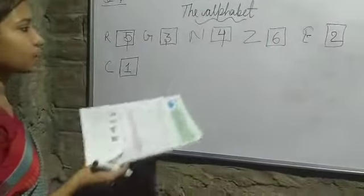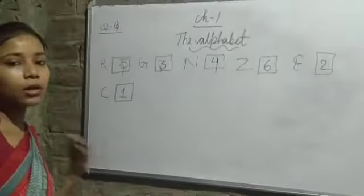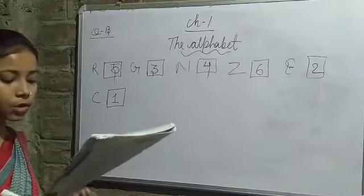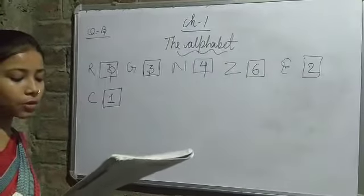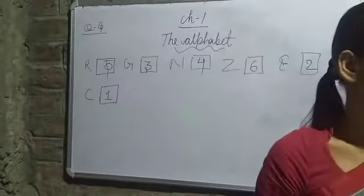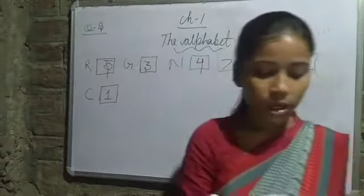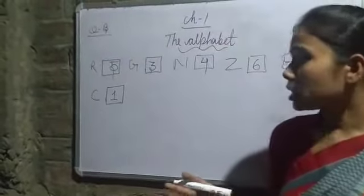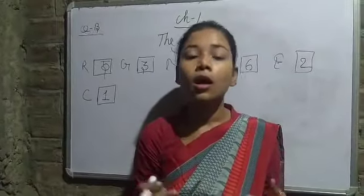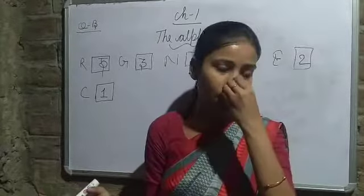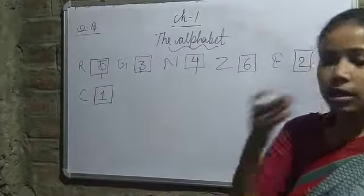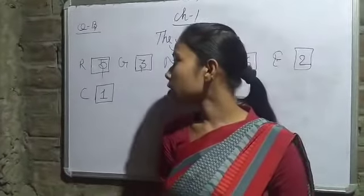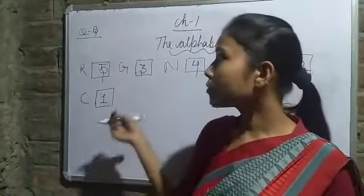So here we have the arrangement of the letters or the words in alphabetical order using numbers. The book is saying that the order in which the letters of the alphabet appear is the alphabetical order. To arrange words in alphabetical order we have to look at the first letter. By looking at the first letter, I have solved question number B.